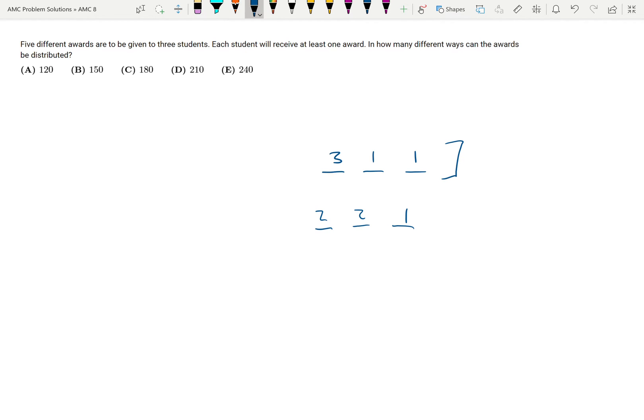Of these arrangements, we could have the middle student get the three awards and the two other students get one each. There are three ways to arrange this scenario if we're not thinking about the types of awards yet. So three ways to arrange the 3-1-1 pattern and three ways to arrange the 2-2-1 pattern.